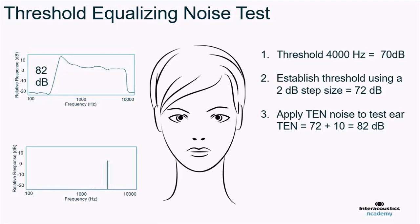Barbara asked: wouldn't the effective masking component of the TEN noise artifactually raise the threshold for everyone — normal and abnormal? Absolutely. Whatever level you put the TEN noise in at, you are going to cause a rise in threshold. The difference is that for a normal hearing person, when you re-establish threshold, the new threshold will be less than 10 dB different from the TEN noise level. Whereas if the threshold is greater than 10 dB above the noise, you're identifying a dead region. But yes — it will be raising the threshold for everyone.